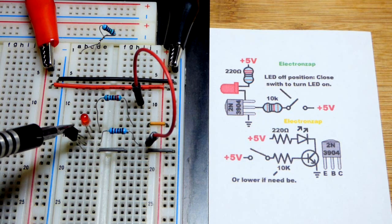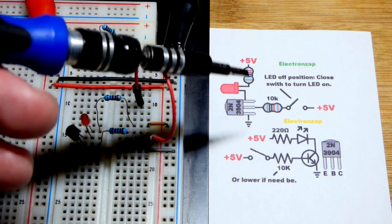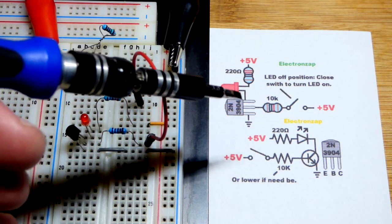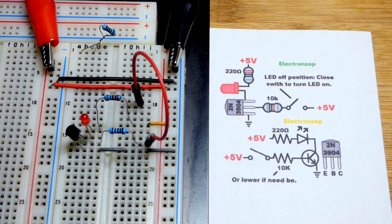But in any case, right now we have it wired as a switch. We have a protective resistor for the LED. The LED wired in the right direction to light up and then the transistor, it comes to ground.